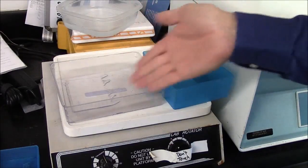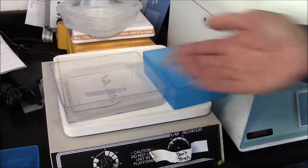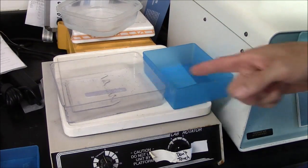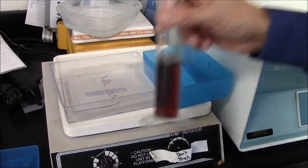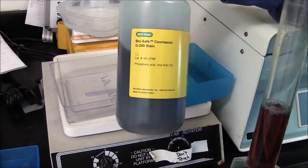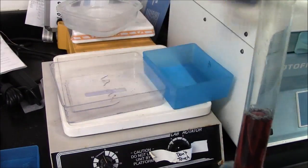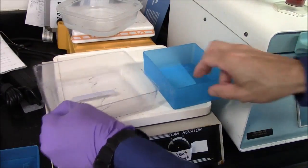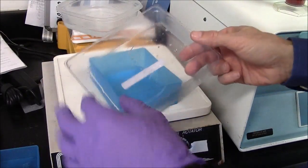I have rinsed this gel twice for about 10 minutes each time with distilled water, 100 to 200 milliliters. And now I want to stain it, so I'll use this stain here, which comes from Bio-Rad. And I use about 40 milliliters, but I need to transfer the gel to a smaller vessel so that the 40 milliliters will cover the gel.